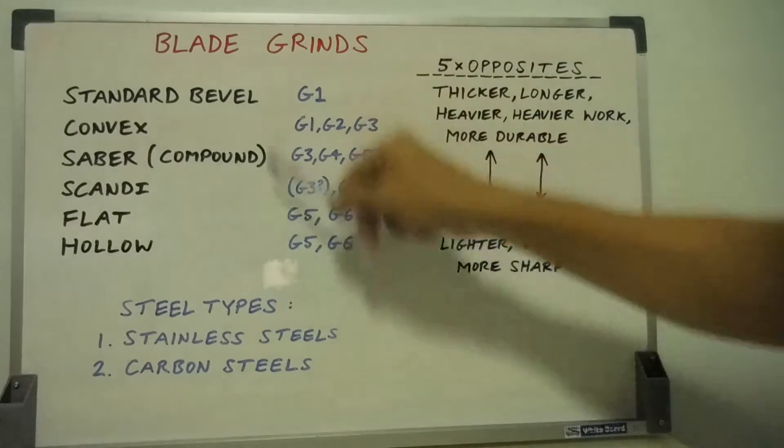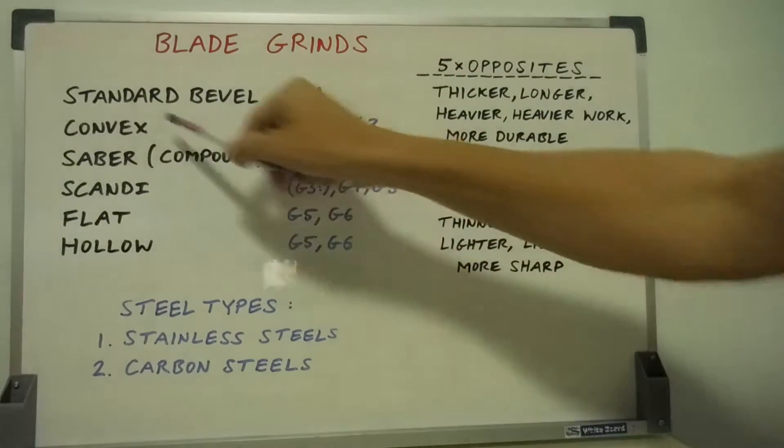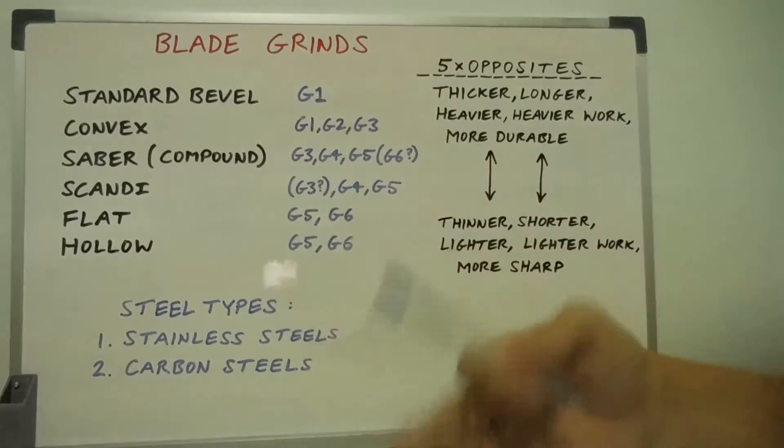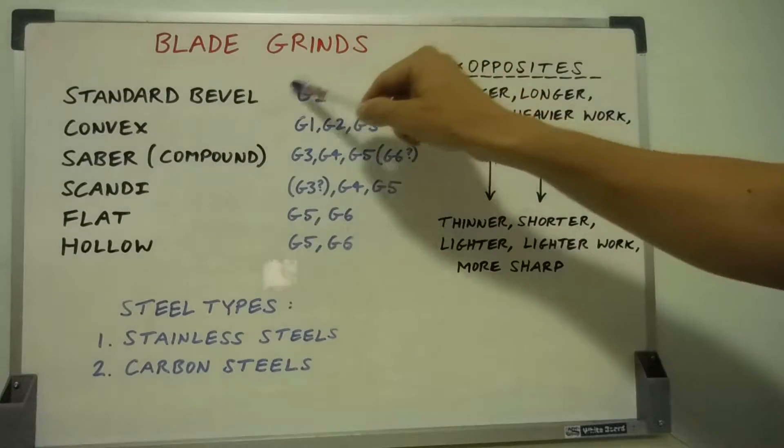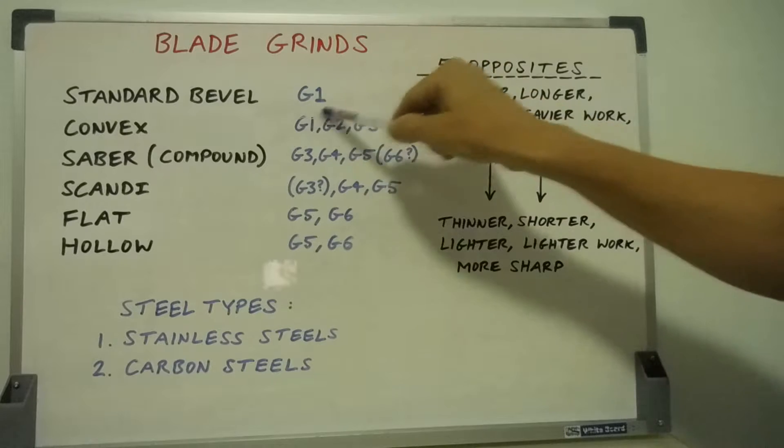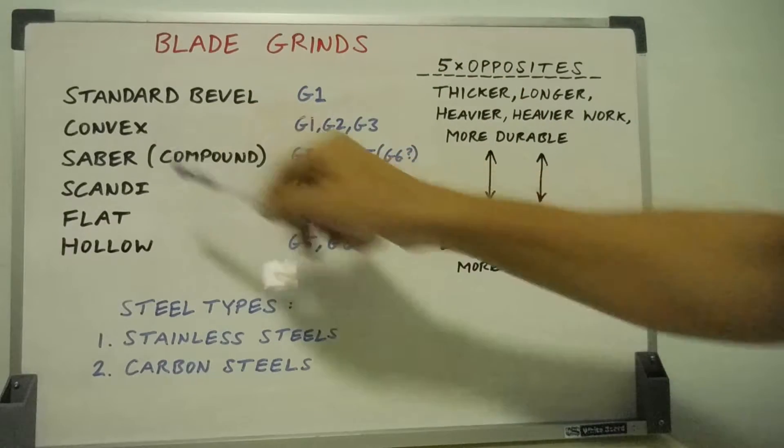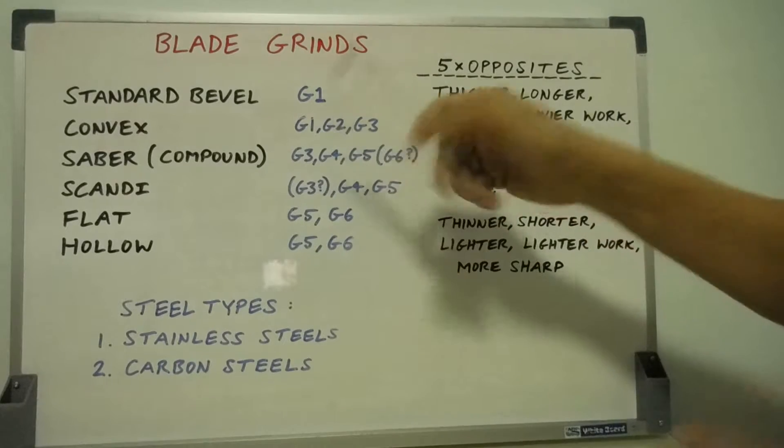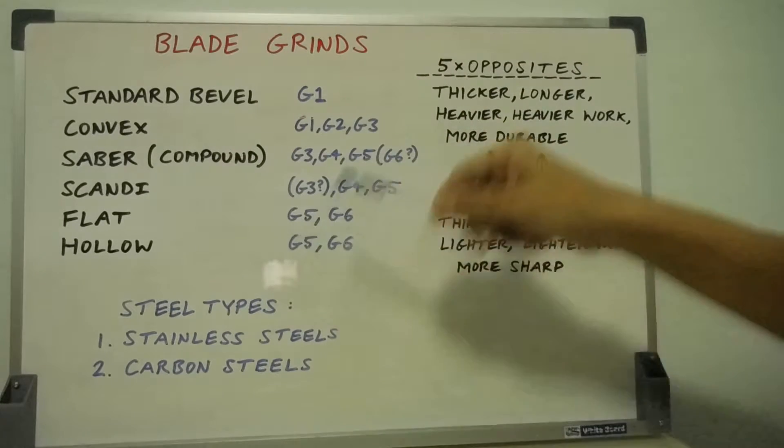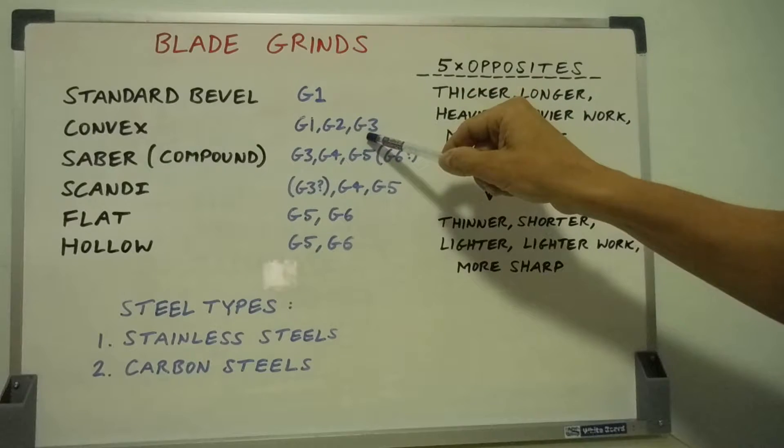And here are my blade groups that they're most suited to. And you can see the standard bevel, very durable, like the parang blade for example, is pretty much only my group one machete. The convex grind, durable again for group one machete. Group two axe, most axe heads should be convex grinds anyway. And the group three main working knife.